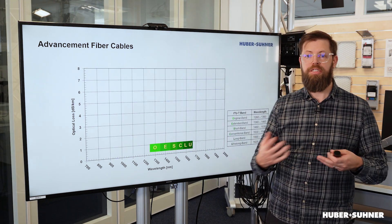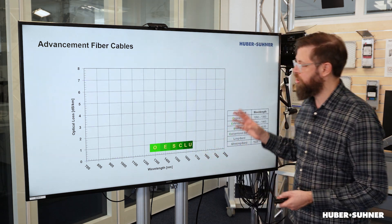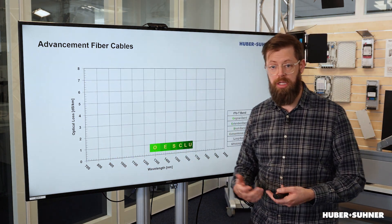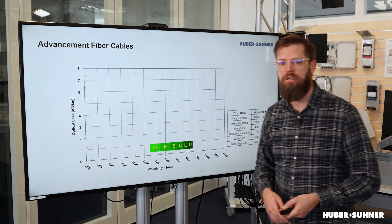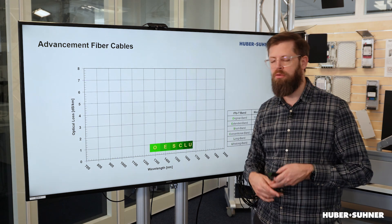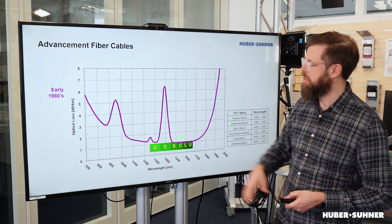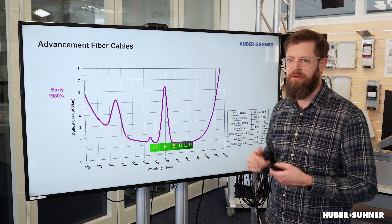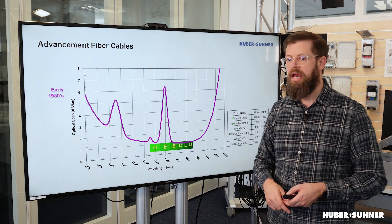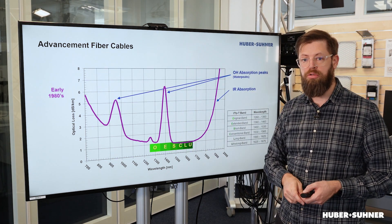Now over the course of time, fiber technology as well as the production processes have improved drastically. To show you how much, here is this diagram. On one axis we've got the optical loss per kilometer — the attenuation — and on the other axis a range from 700 nanometers to 2,000 nanometers. In the middle we've got the ITU grid, our main transport window, where we have CWDM and DWDM. Looking at a fiber cable from the early 80s, you can see two huge humps of attenuation — one at roughly 950 nanometers and the other just shy of 1,400 nanometers — and these were due to hydroxide embedded in the fiber, which is why they're called the water peaks.